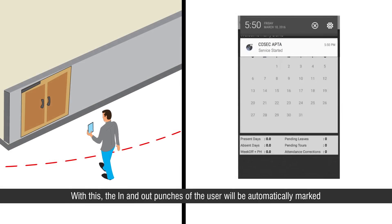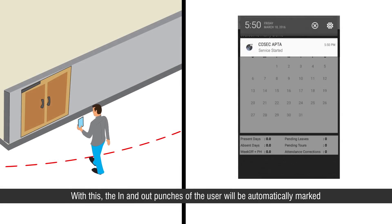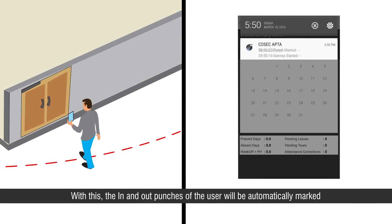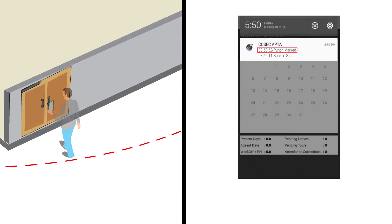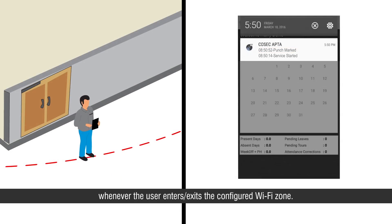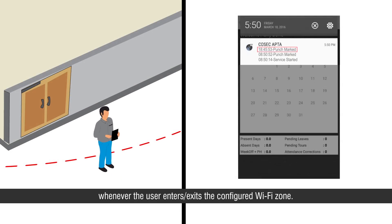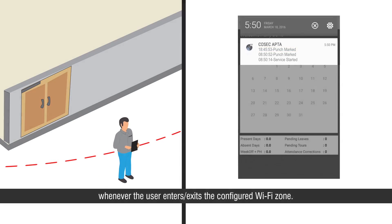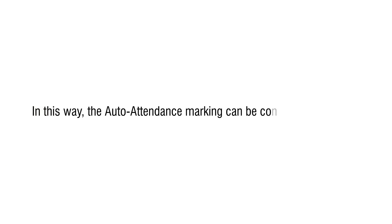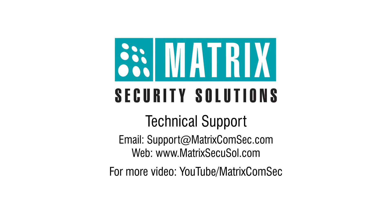With this, the in and out punches of the user will be automatically marked whenever the user enters or exits the configured Wi-Fi zone. In this way, auto-attendance marking can be configured in Cosec. Thank you for watching this video. For further queries, please contact the Matrix technical support team.